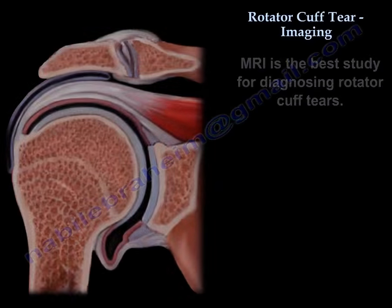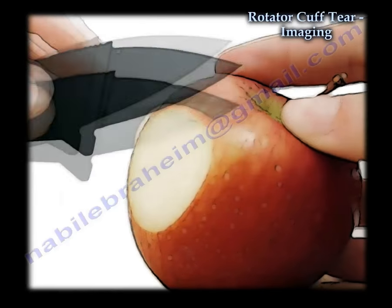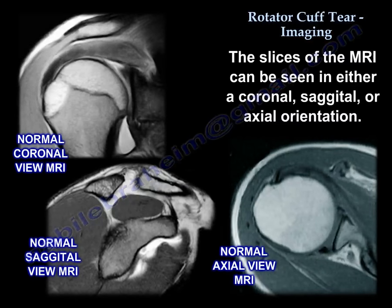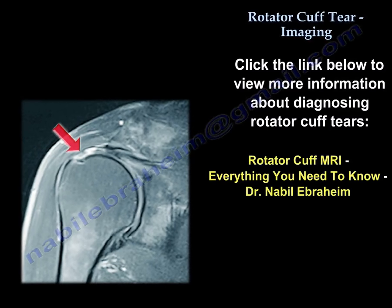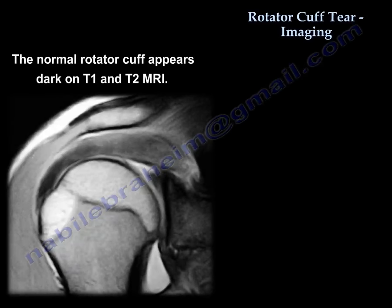We will order an MRI, which is the best study for diagnosing Rotator Cuff Tear. The MRI takes slices or cuts of the bone and the soft tissue structures — similar to taking slices from an apple so you can see the inside. The slices of the MRI can be seen in a coronal, sagittal, or axial orientation. I have another video on that subject if you want to view it. The normal Rotator Cuff appears dark on T1 and T2.